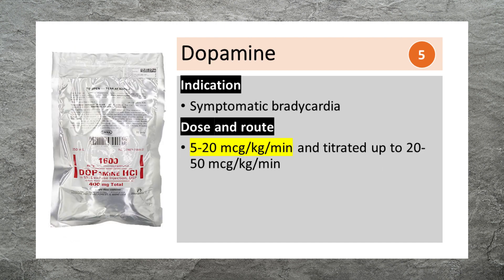Dopamine is used to treat symptomatic bradycardia. It can be given as a continuous IV infusion, starting at 5-10 mcg per kg per minute and titrated up to 20-50 mcg per kg per minute.